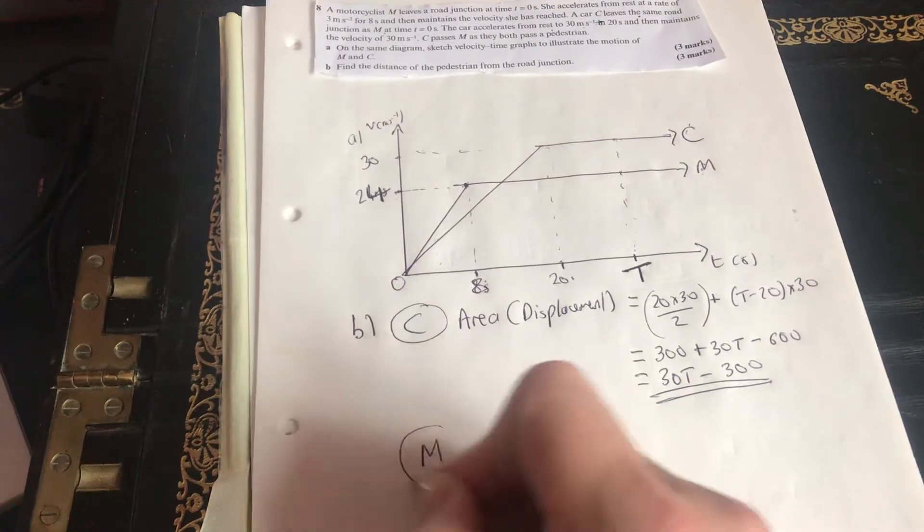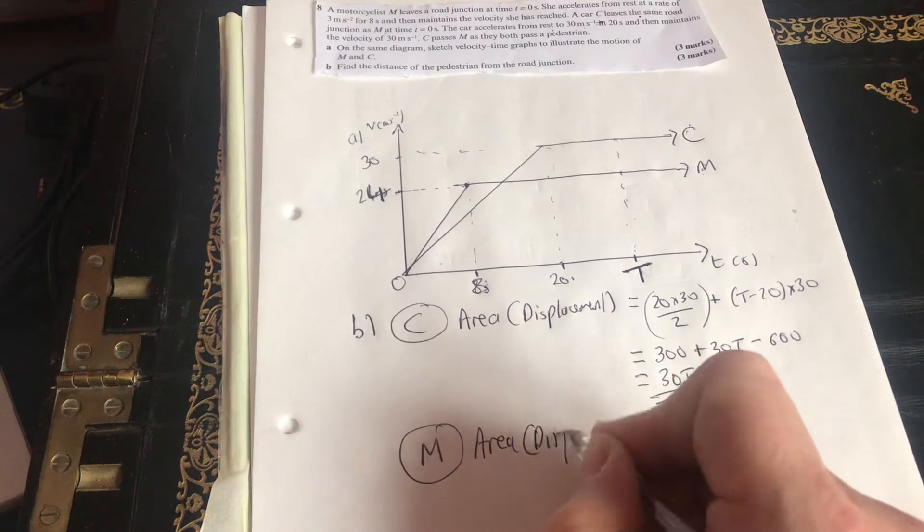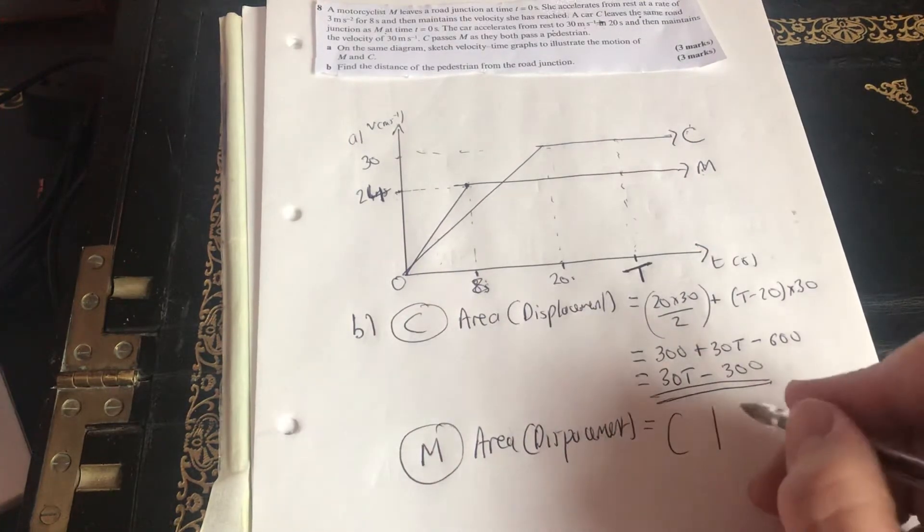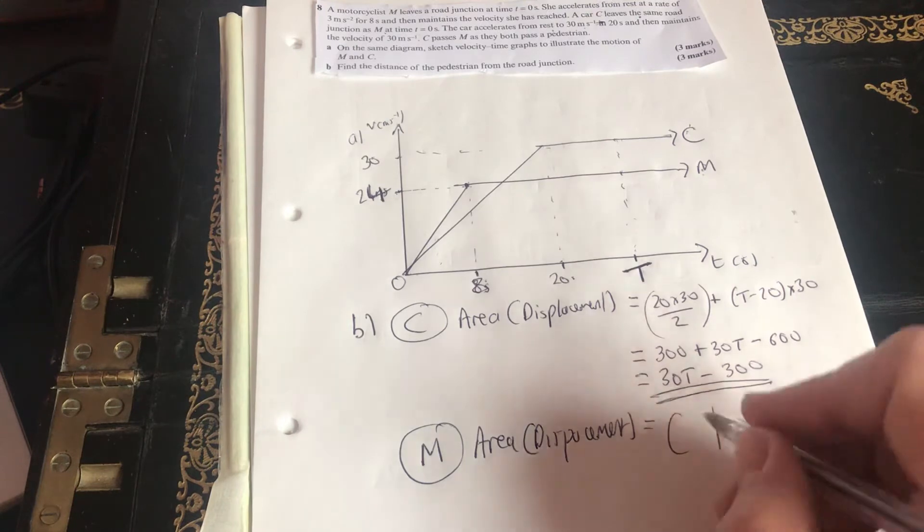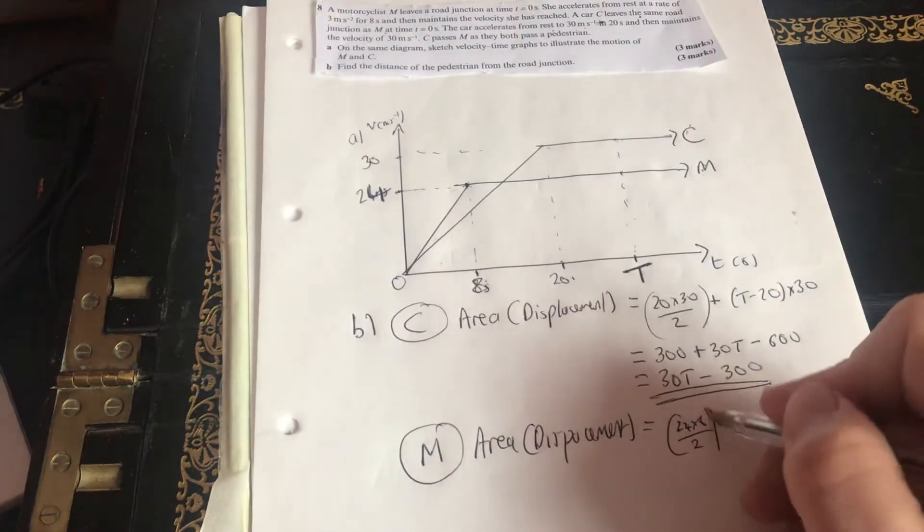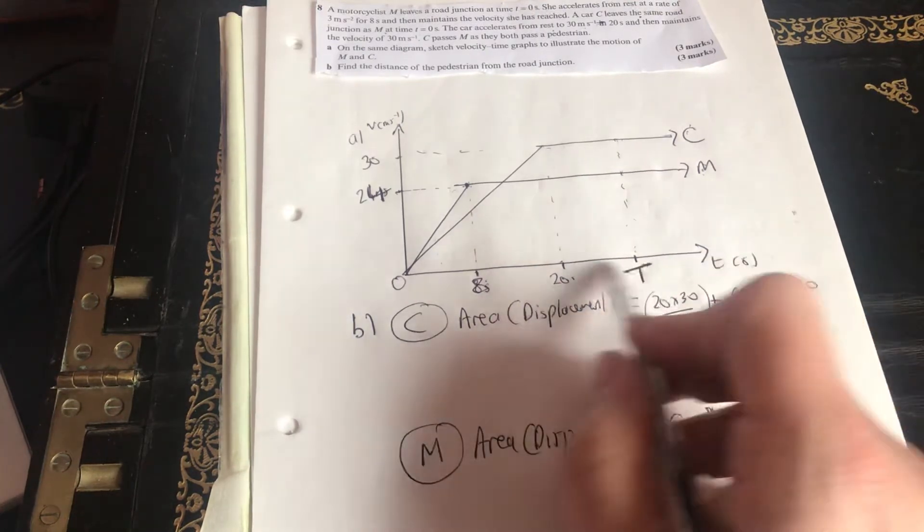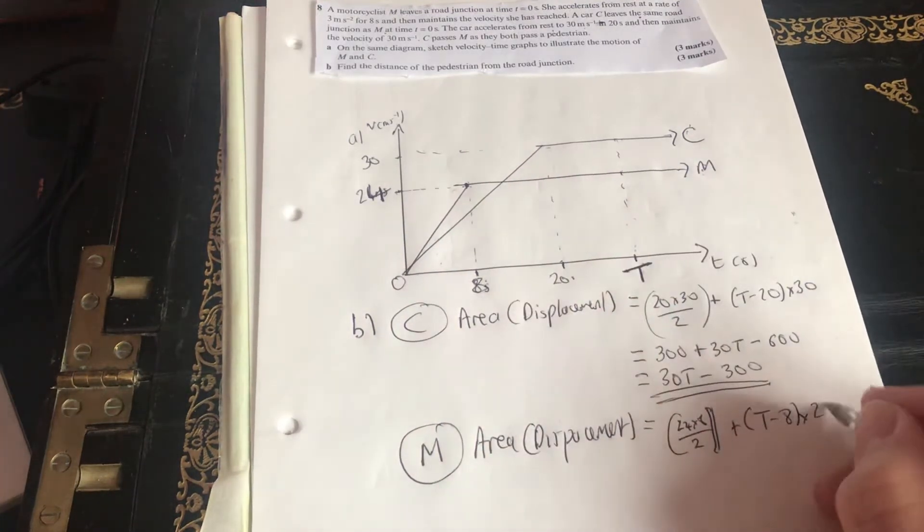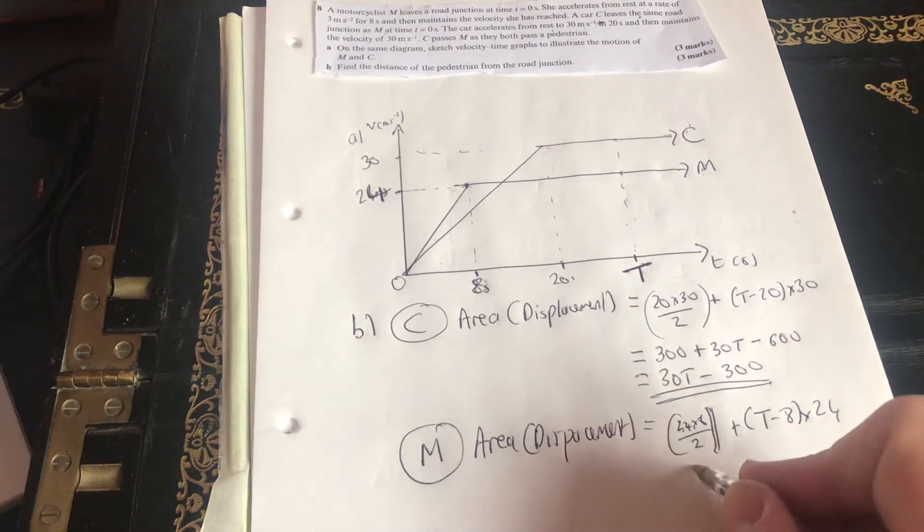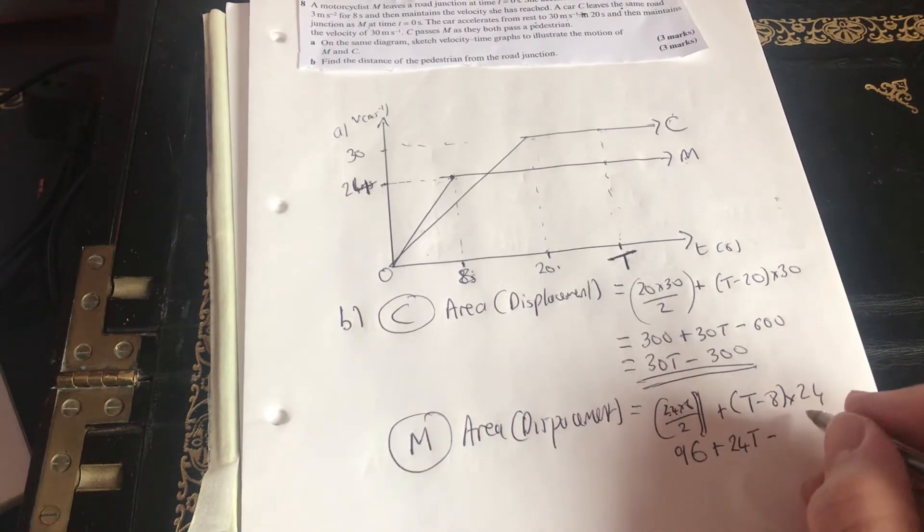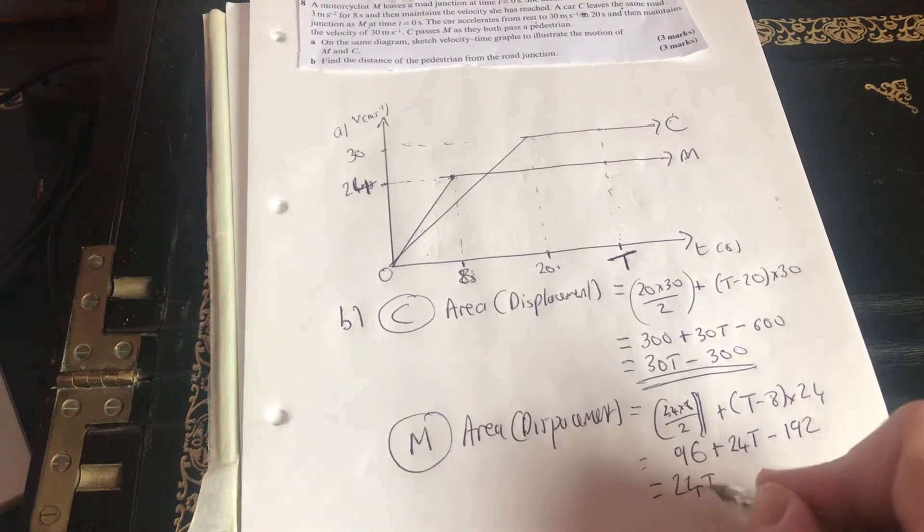Well, what about the motorcyclist? Think about the area or the displacement. That's going to be this little triangle, 24 times 8 over 2 for that triangle there plus T minus 8 times 24. So 24 times 8 over 2 gives me 96 plus 24T minus 192. Simplify this: 24T minus 96.